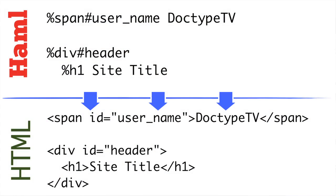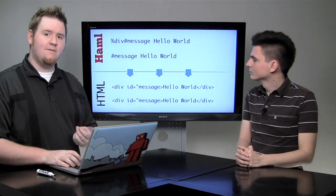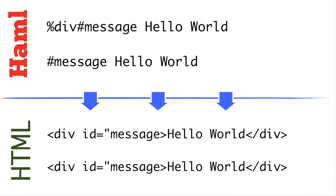The hash symbol is used to define the ID of a tag. It's a shorthand syntax — so if we want to create a span with the ID of username, we simply add a hash username to our tag definition. When it's translated, the username will be added to the ID attribute of our span tag. We can also create a div with the ID header, with an H1 with site title indented inside. Since divs are so commonly used, if you omit the actual tag when using an ID or class name, it defaults to being a div tag — so these two lines are identical.